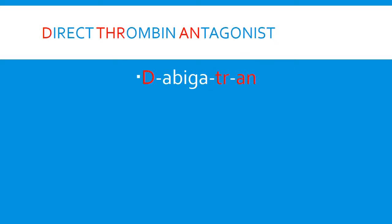That leaves the last one, dabigatran. It is a direct thrombin antagonist. There is no real clever, witty way to remember this, but you can use this one. D is for direct, and the TR is for thrombin — they took the H out — and the N is for antagonist. So: dabigatran.